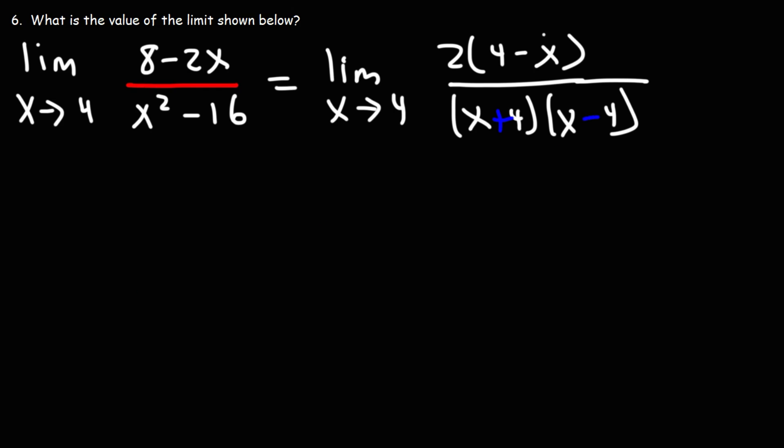Now notice that four minus x and x minus four—they're not exactly the same, but they are similar. When you see a situation like this, you want to factor out a negative one. If we factor out negative one from four minus x, we can put that negative in front. Negative one times two is negative two. The positive four becomes negative four, and the negative x becomes positive x. So we can put the positive x in front and the negative four in back.